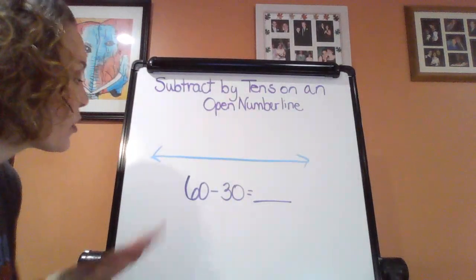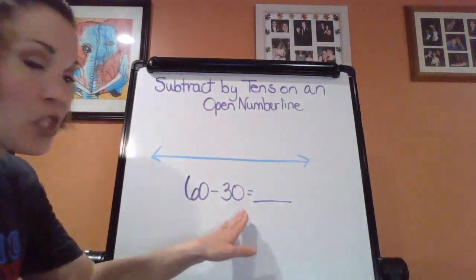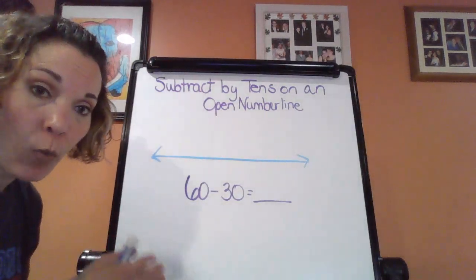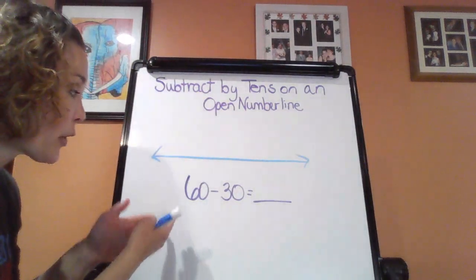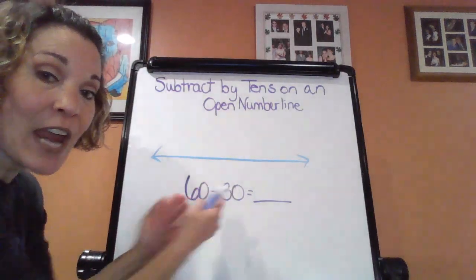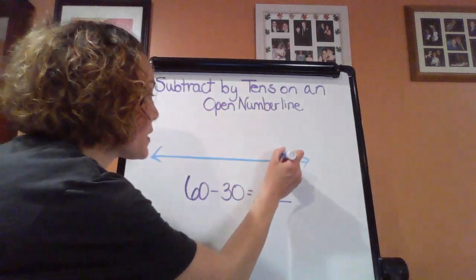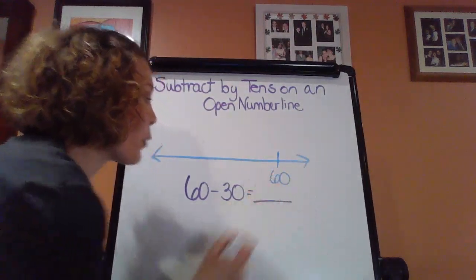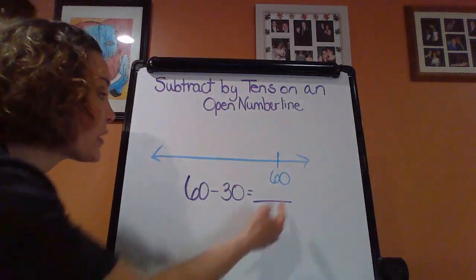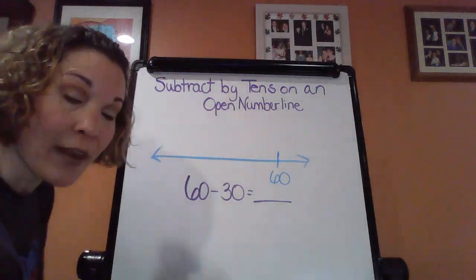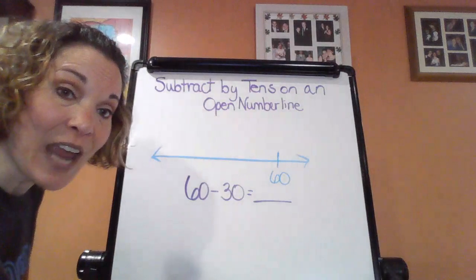Okay, we're back. So now here's our new problem. We have 60 minus 30 equals. So yet again, where do I want to start? My larger number here is 60. I want to take away 30 from that. So let's start with my 60 over here to the right. That's my larger number there. And I want to count back 30. So how do I want to do that? I want to split that up by 10s.